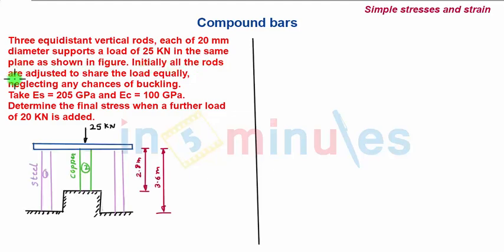Initially all the rods are adjusted to share the load equally, neglecting any chances of buckling and taking ES equal to 205 GPa and EC equal to 100 GPa. Determine the final stresses when a further load of 20kN is added.